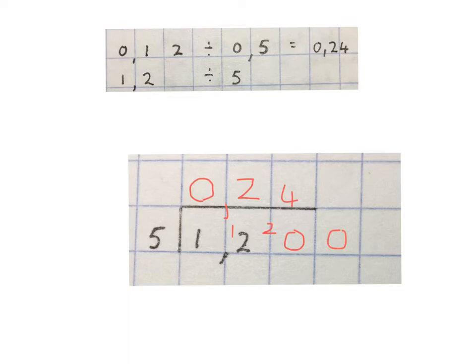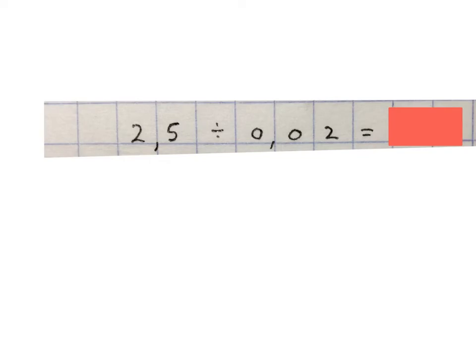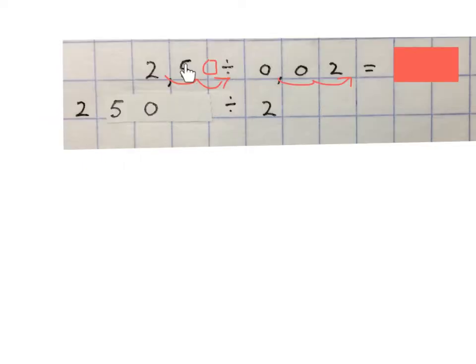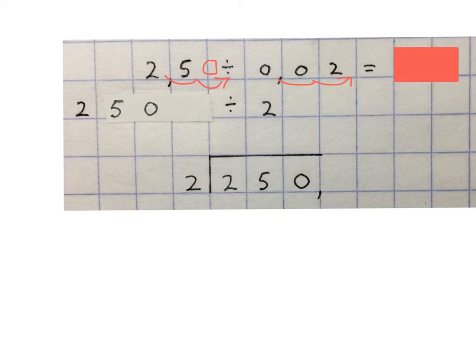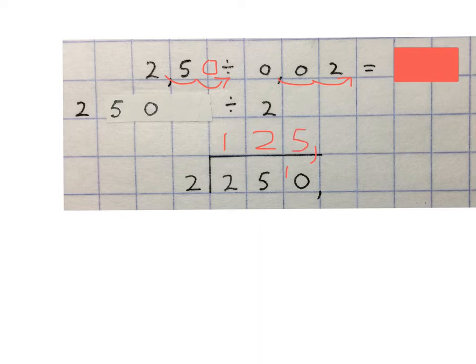Now let's do a few special ones. Here we have 2.5 divided by 0.02. The rule says move the comma to the right in both numbers until the divisor is a whole number. That means we move it two places to the right: this number becomes 250 and this number becomes 2. We divide 250 by 2 using short division. Put the comma in the answer, then: 2 goes into 2 once, nothing left. 2 goes into 5: 2 times, remainder 1. 2 goes into 10: 5 times, no remainder. Final answer: 125.